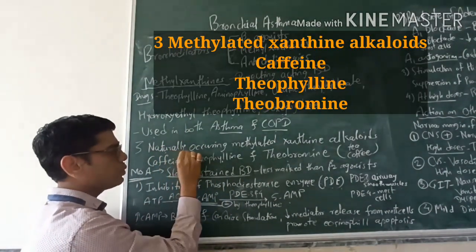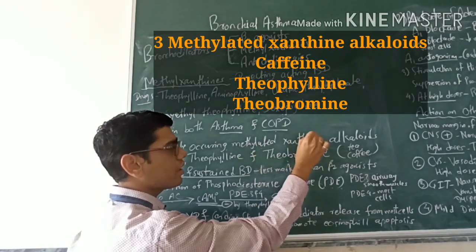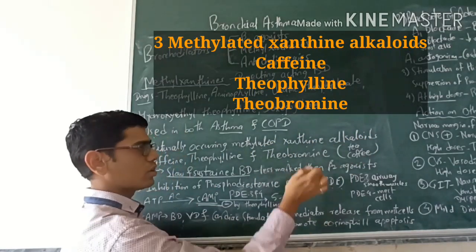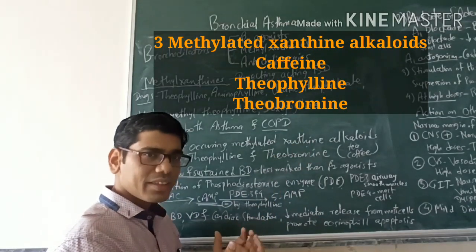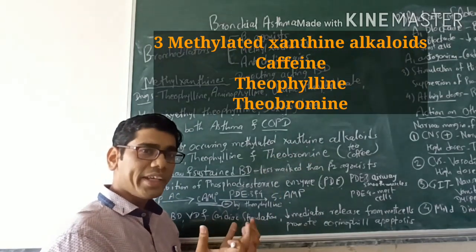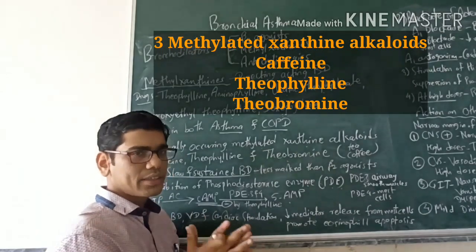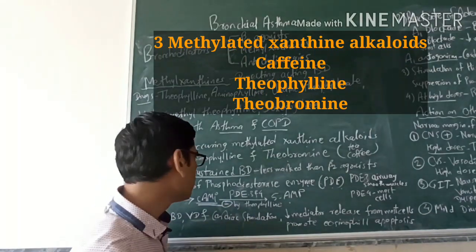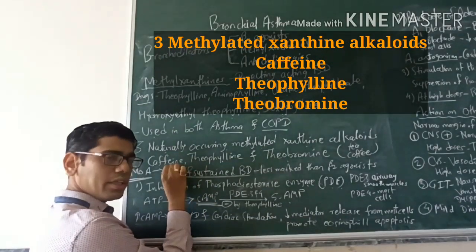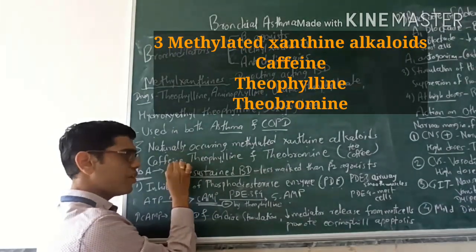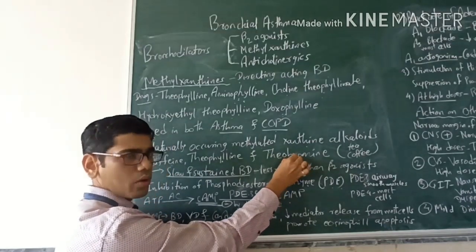Theophylline is one of the three naturally occurring methylated xanthine alkaloids present in beverages like tea, coffee, or cocoa. Tea contains two of them. The three xanthine alkaloids are caffeine, theophylline, and theobromine.